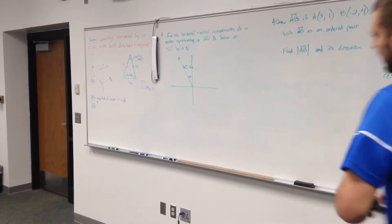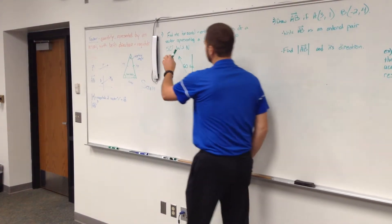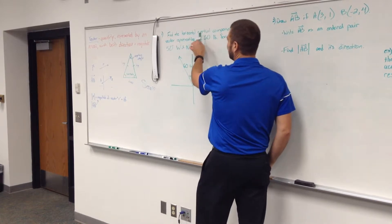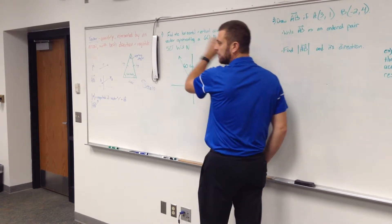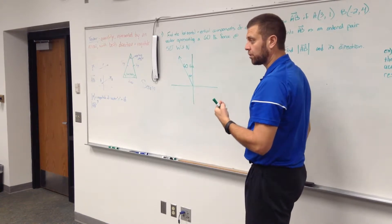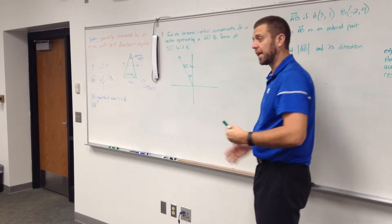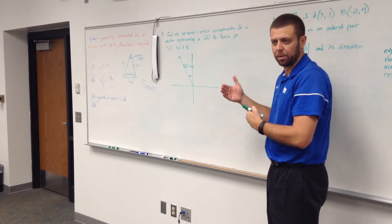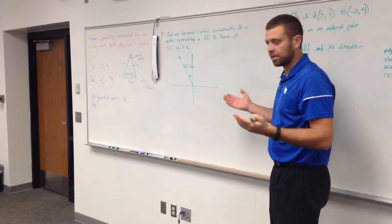Okay, so now the next thing we're going to do, make sure we're focusing here. We're going to find the horizontal and vertical components of a vector. Horizontal and vertical components of a vector, I'm really just asking you for the x component and the y component of any given vector.